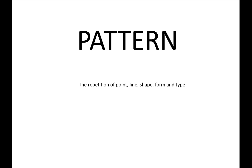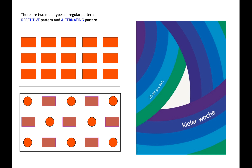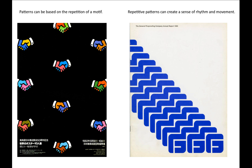Pattern is the repetition of point, line, shape, form, and type. There are two main types of regular patterns: repetitive and alternating. Patterns can be based on the repetition of a motif. Repetitive patterns can create a sense of rhythm and movement. Patterns can be regular and irregular.